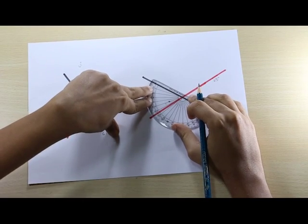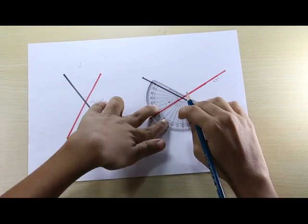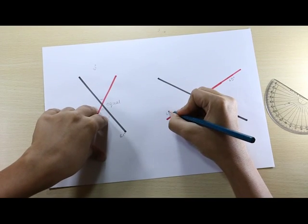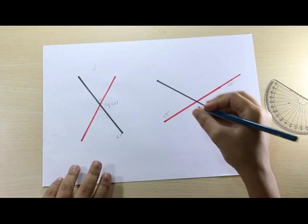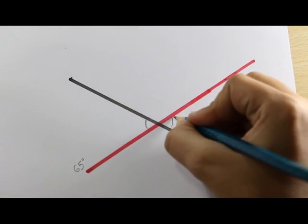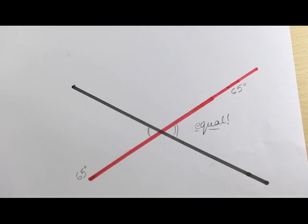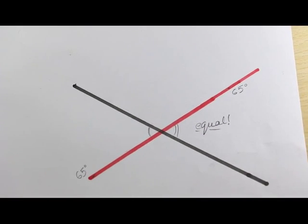Again, midpoint on the point of intersection and the bottom line of the protractor on the black line. The angle formed by the red line is again 65 degrees. This tells us that vertically opposite angles formed by two lines intersecting are in fact equal.